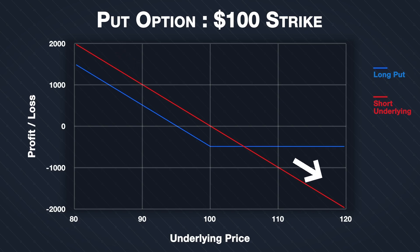If you short 100 shares, every dollar decrease in the underlying price will give you a profit of $100. The only cap on this is if the price falls to zero.